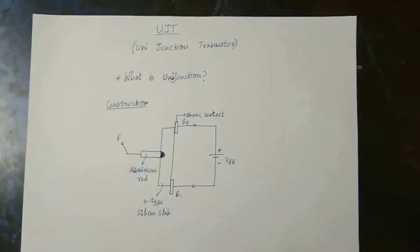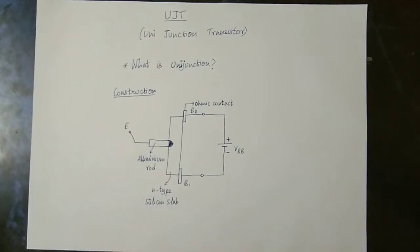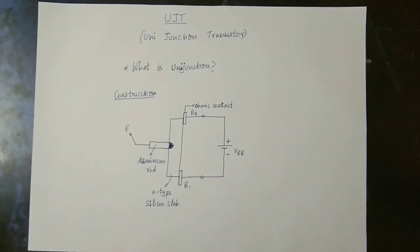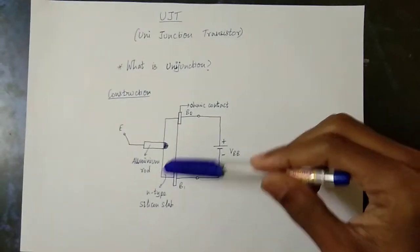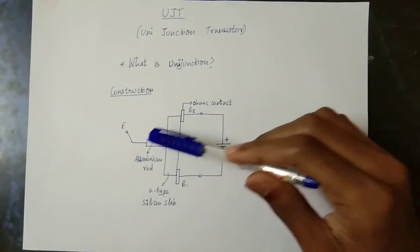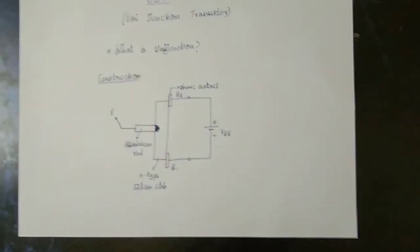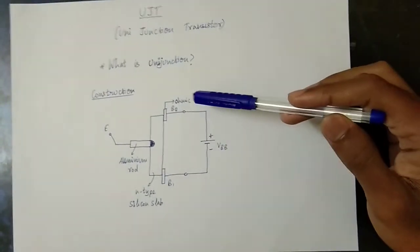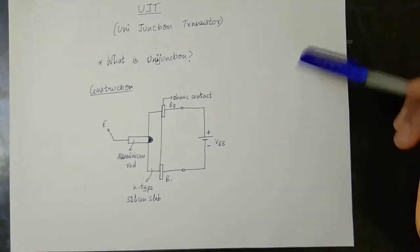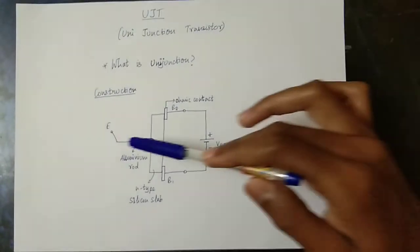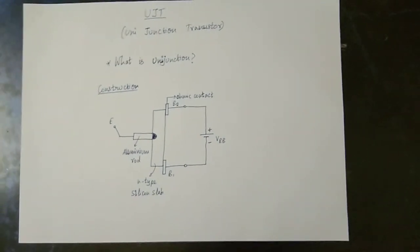Look at the construction. There is an aluminium rod called the P-layer. The main body is an N-type silicon slab. This P-layer forms the PN junction. There is B2 and B1. This is the emitter. This is a PN Junction Diode. The PN junction is approximately 1mm.